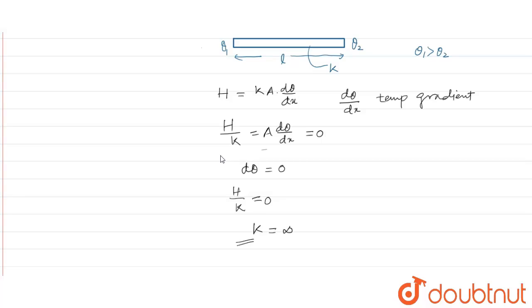So thermal conductivity will be infinity, then temperature will be uniform very soon.